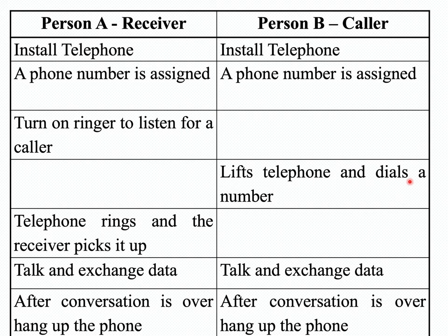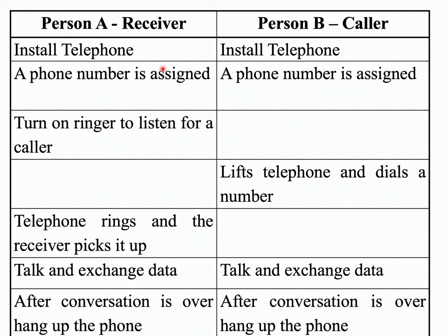Person B, to initiate communication, lifts the telephone and dials the number. Once the number is dialed, the connection is established, the telephone rings, and person A picks up the receiver and attends the call. Once the connection is established, both users can talk and exchange data. After the conversation, both person A and person B can hang up the phone. This scenario is very similar to our socket scenario.